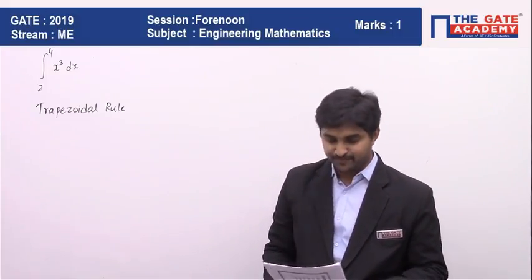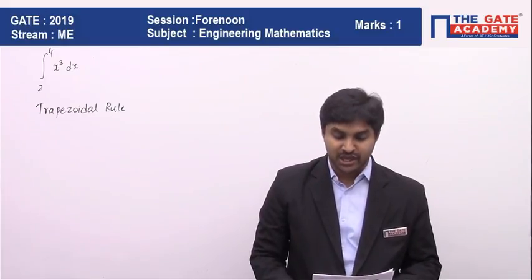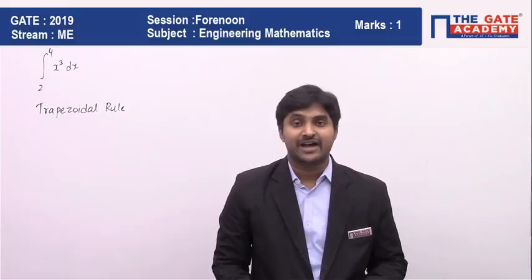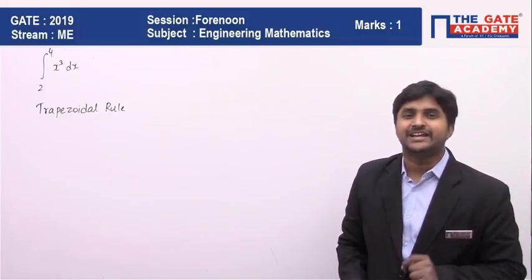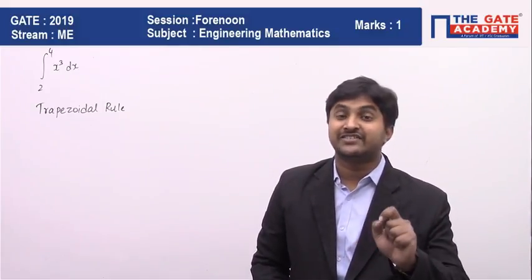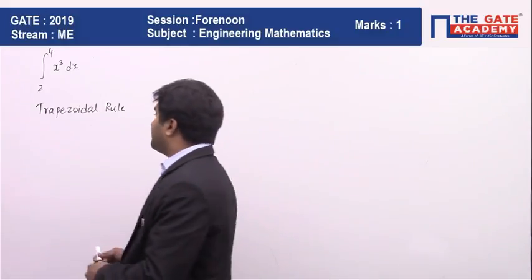To solve this problem we're going to use the trapezoidal rule. It is given that it is two segment, the meaning of two segment is that the value of n is going to be equal to 2.